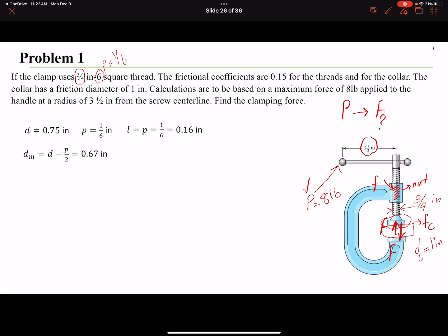The friction coefficients are given to us. These f's are the same as mu's, so in this chapter we use f. That's the diameter or the mean diameter or the friction diameter of the collar. If you want to find the torque, you have this 8 pounds multiplied by the moment arm r.